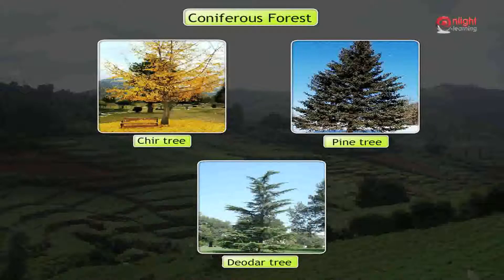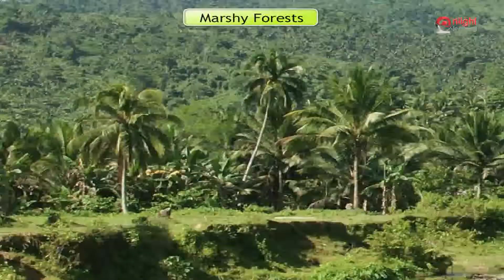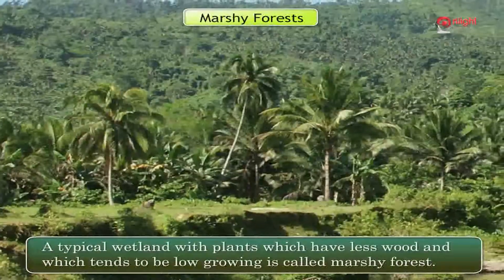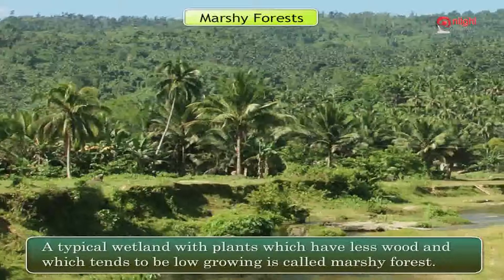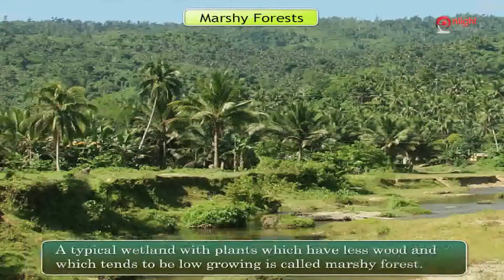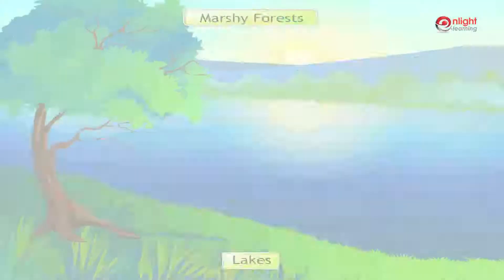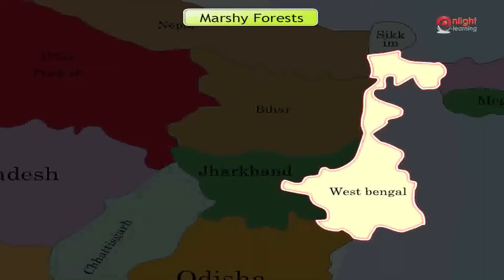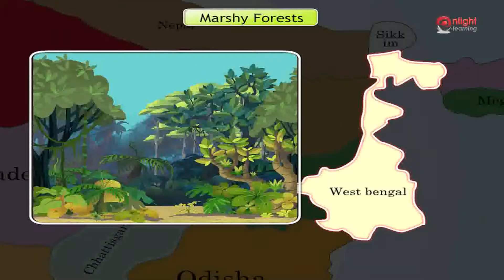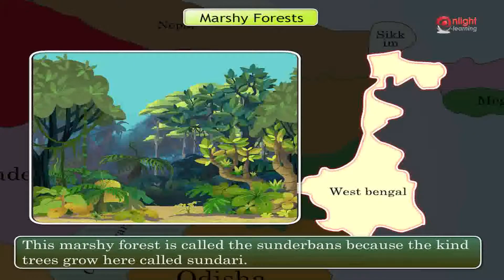Marshy forests: A typical wetland with plants which have less wood and which tends to be low-growing is called a marshy forest. They are found in the deltas of rivers, edges of lakes and streams. For example, in West Bengal, we have thick forests on the delta of the river Ganga. This marshy forest is called the Sundarbans because the kind of trees that grow here are called Sundari.